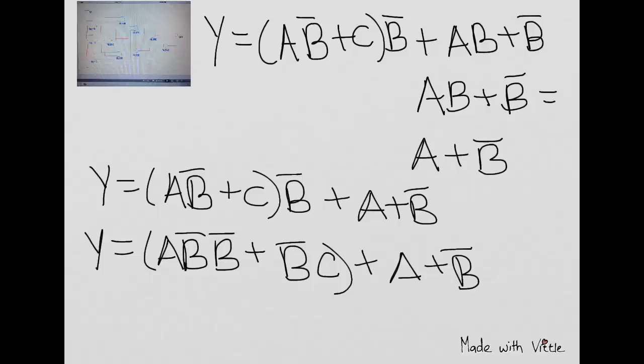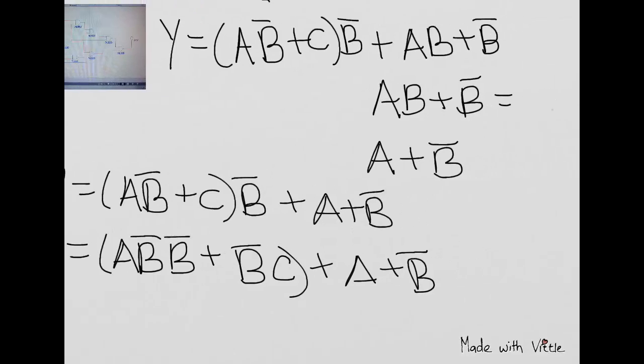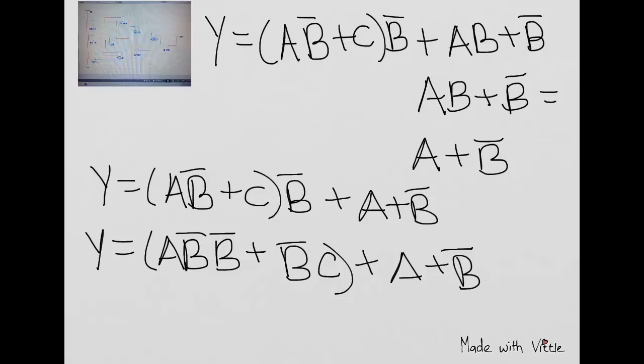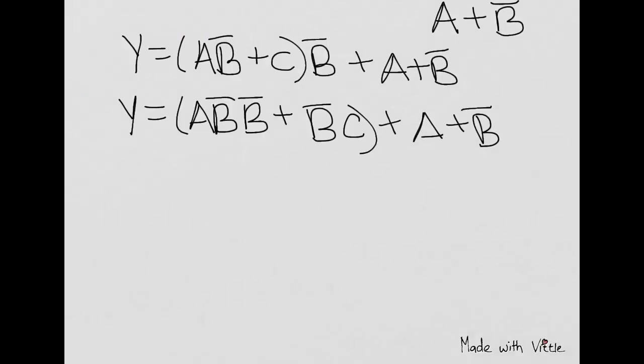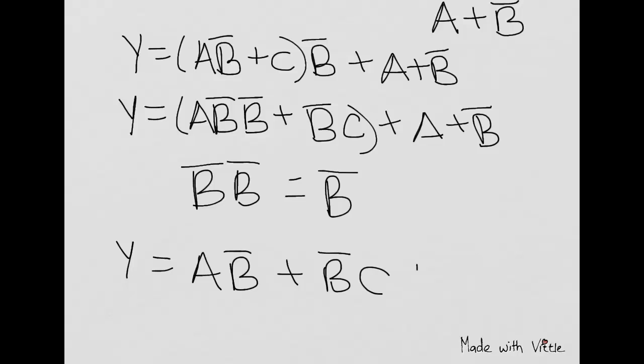Okay, so now that I have that expression, what would I want to do next? So what do we have when we have NOT B and NOT B? That's just going to be equal to NOT B, correct? So we're going to have then Y equals A and NOT B, or NOT B and C, or A or NOT B.